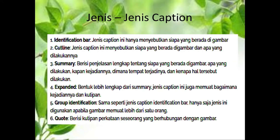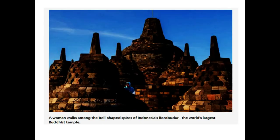The second type is cutline. This type of caption mentions who is in the picture and what they are doing. So if identification bar only mentions who and where, cutline mentions who is in the picture and what they are doing. For example: 'A woman walks among the bell-shaped spires of Borobudur, the world's largest Buddhist temple.' That is what a cutline caption looks like.